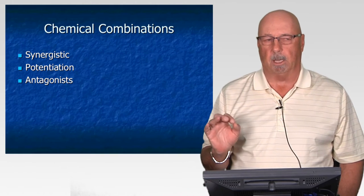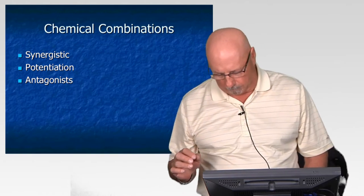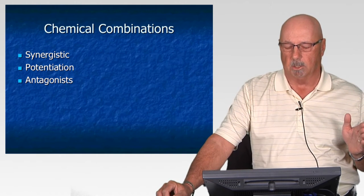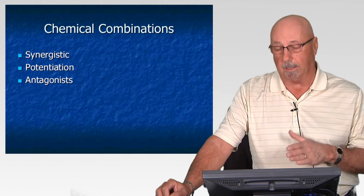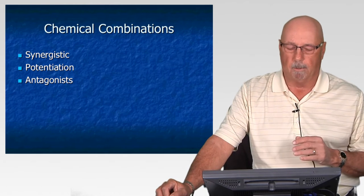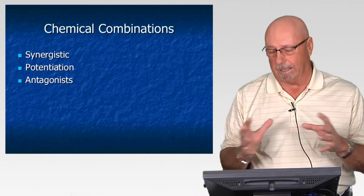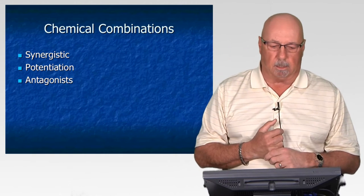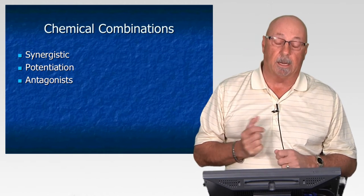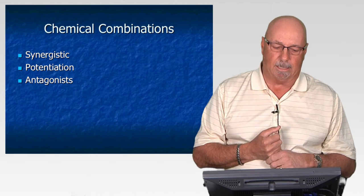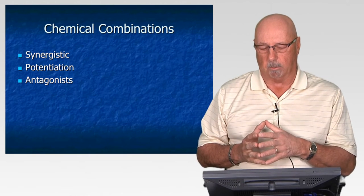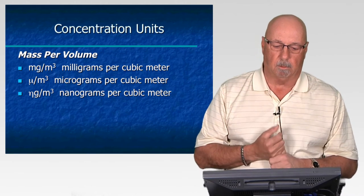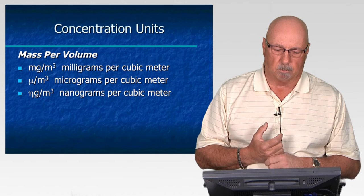We can also have compounds referred to as antagonists. Chemical A causes a certain type of damage and chemical B causes a certain level of damage, but when exposed to A and B together they negate or cancel out the toxic effects each one has. The best documented example is lead exposure and EDTA — EDTA is a chelating agent used to counteract exposures to lead. In that sense it was beneficial.